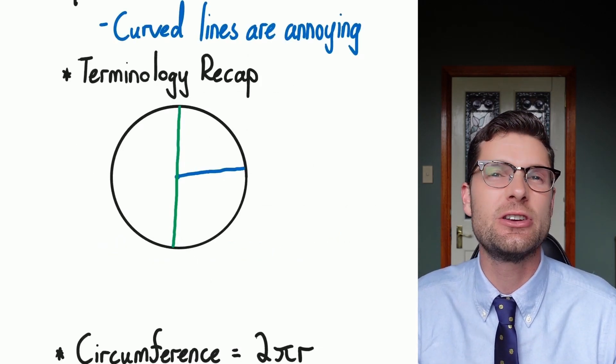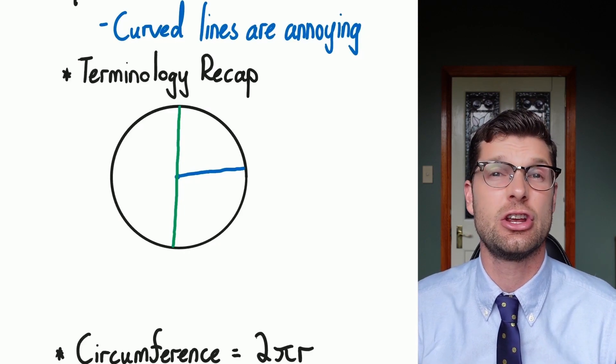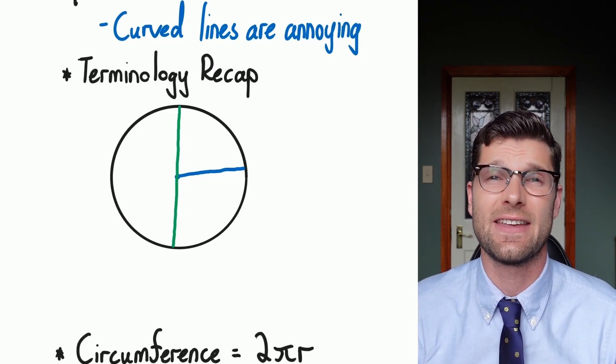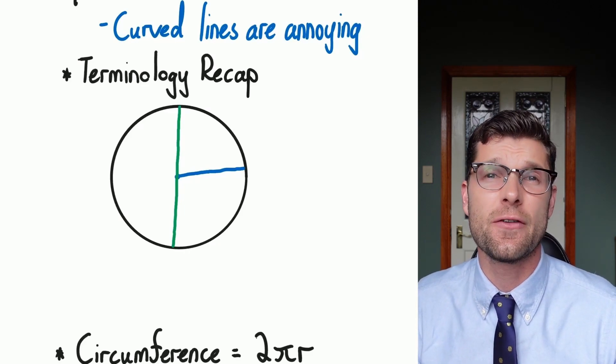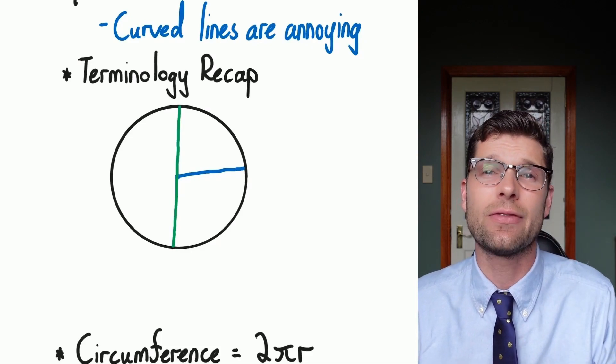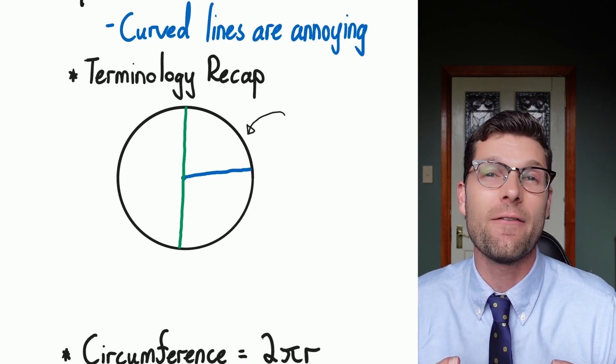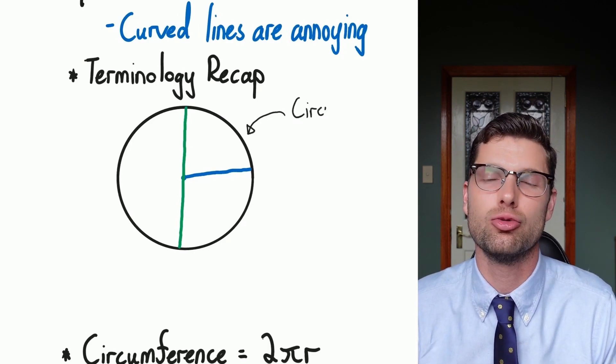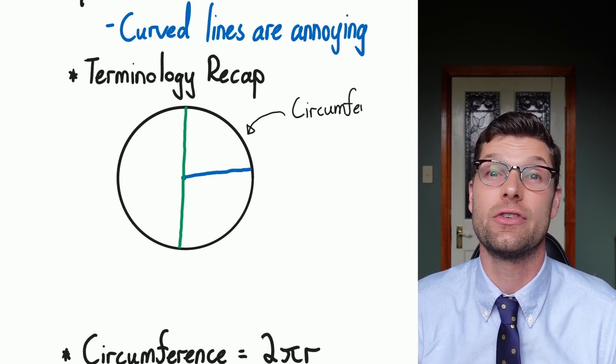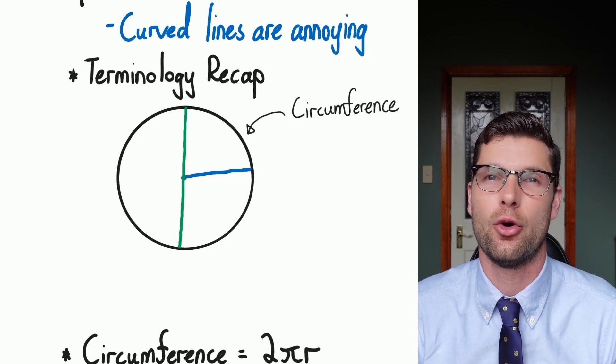So before we jump into this topic, we just have to look at some of the terminology that we need to know in order to get these questions correct. So the first one is that the distance around the outside of the circle, which would be called the perimeter in some cases, but for a circle this distance around the outside is called the circumference and that's a super important term.